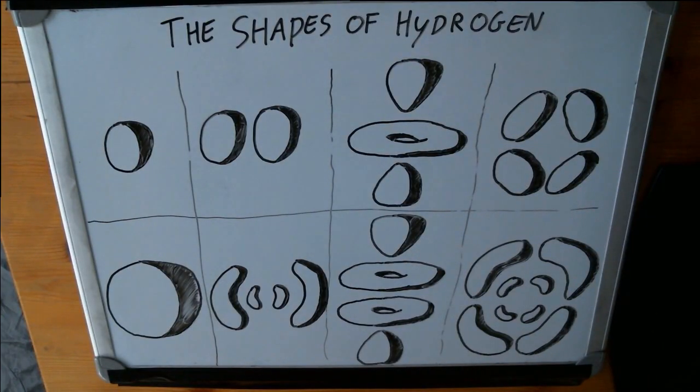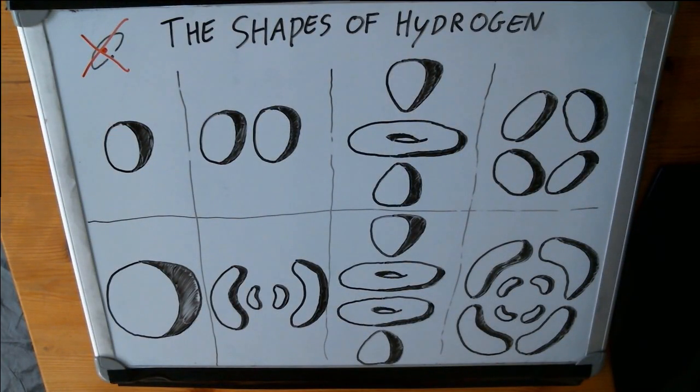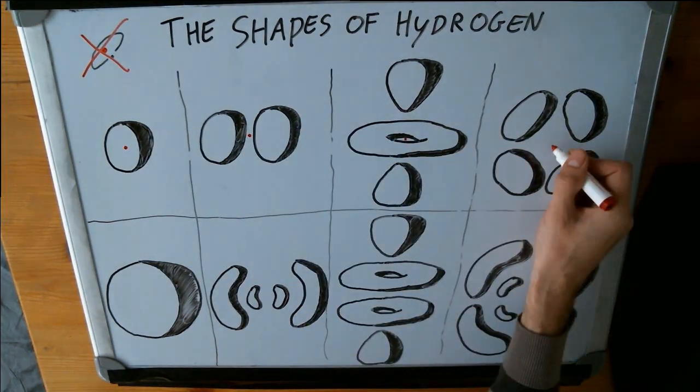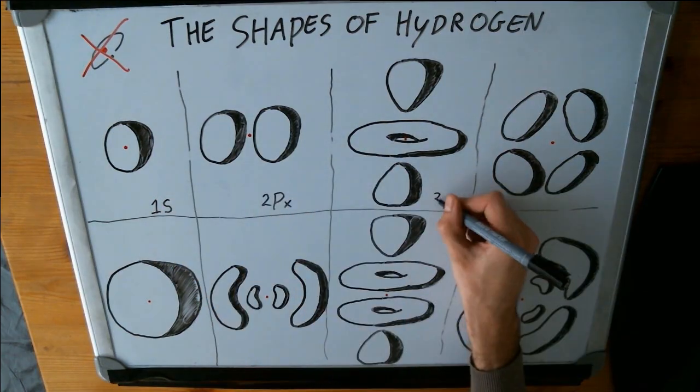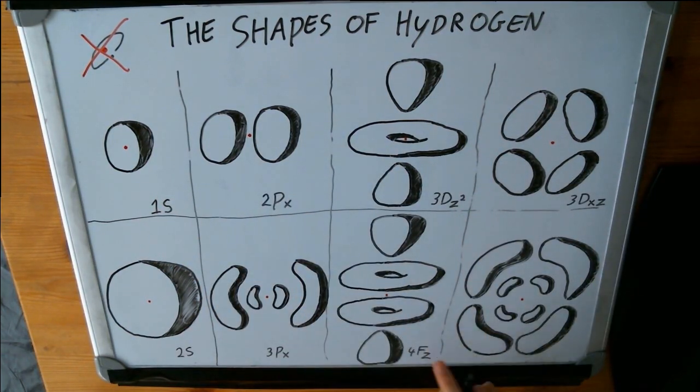So this is how an electron fills the empty space in an atom—not by spinning around, but instead with its blobby-shaped wave function, which we call the orbital. What I've drawn here each time is the same hydrogen atom with a proton at the center, and the electron has been allowed to go into a different orbital each time by giving it energy, for instance.